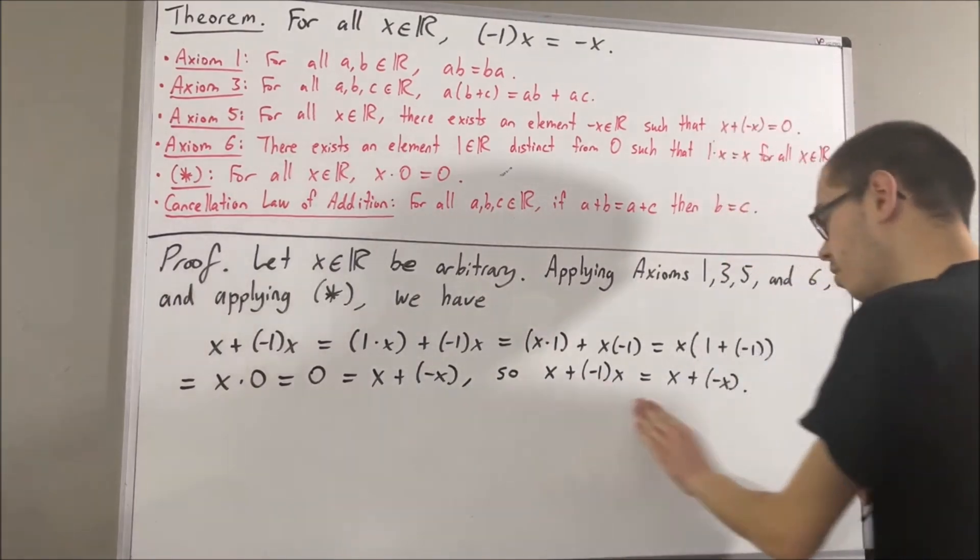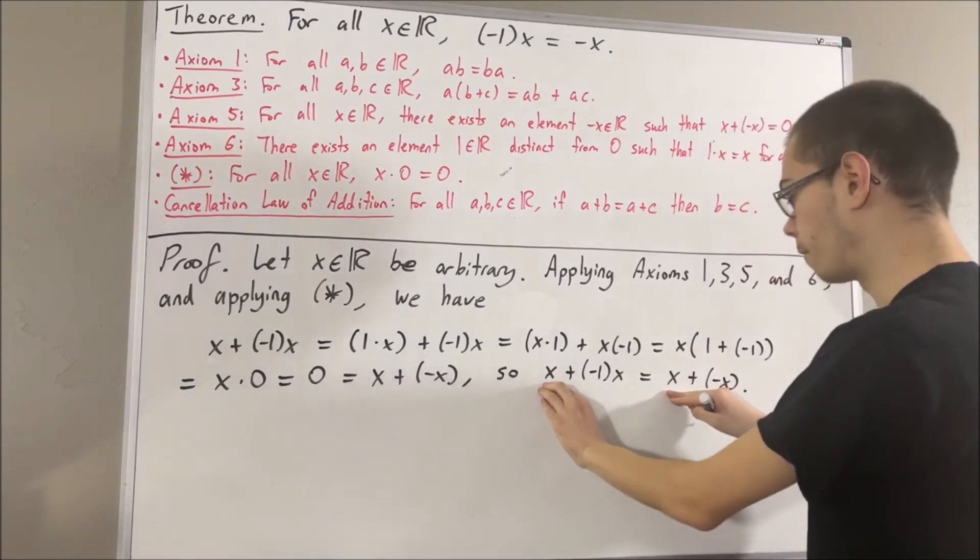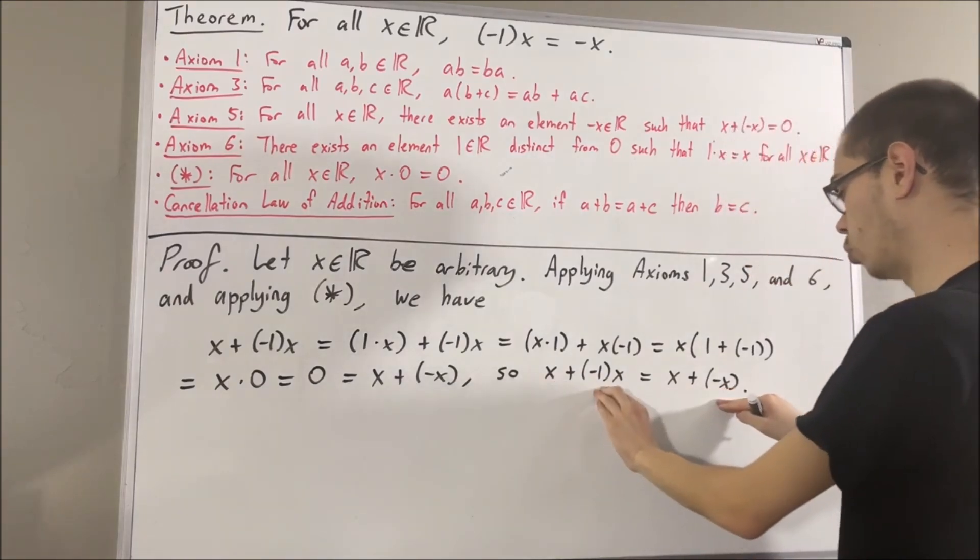And from here, we can apply the cancellation law of addition to cancel out the x's. And we're left with negative 1 times x equals negative of x.